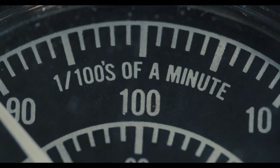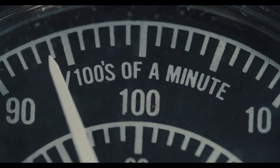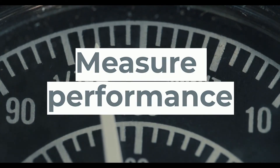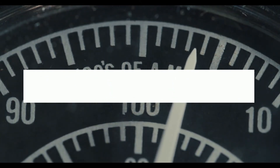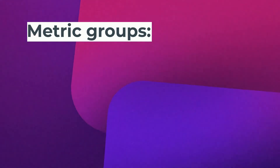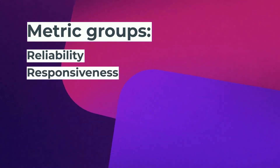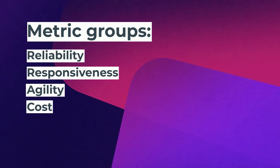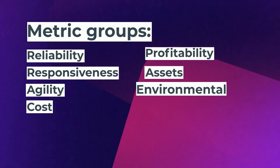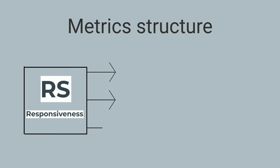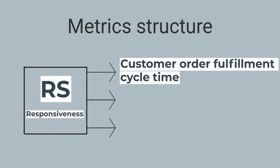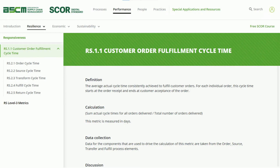One of the goals of SCOR is to measure business performance. To measure performance, you need to know what to measure. The performance metrics are split into the following groups: reliability, responsiveness, agility, cost, profit, assets, environmental, and social. The metric structure has three levels. For example, on the first level of responsiveness, you will find customer order fulfillment cycle time. SCOR provides a definition for each metric on all levels.